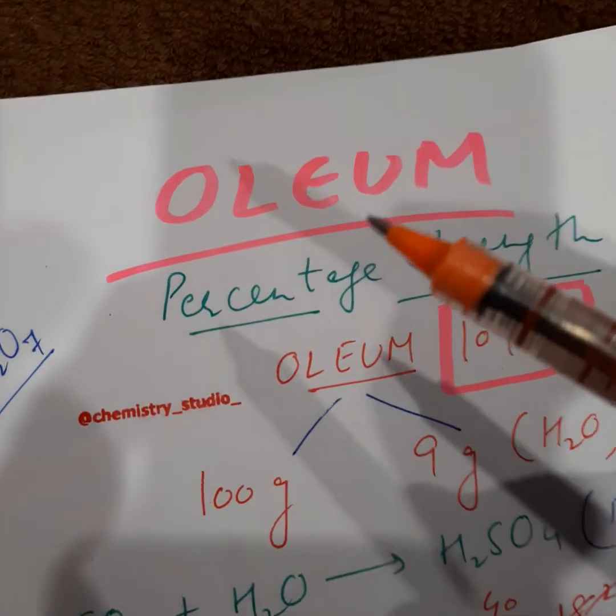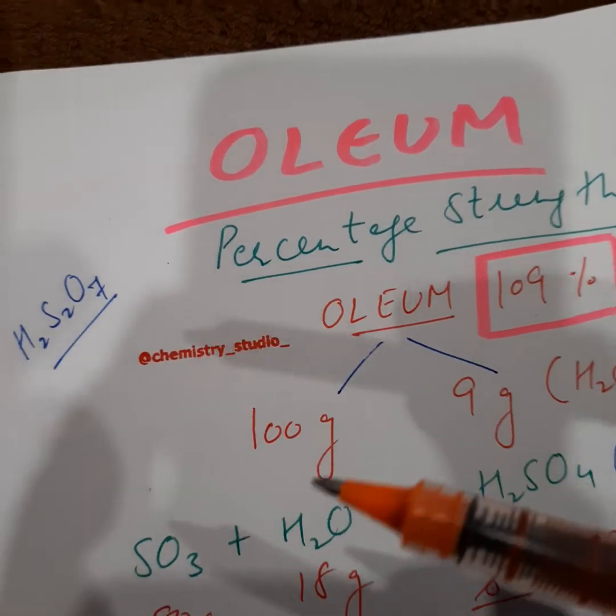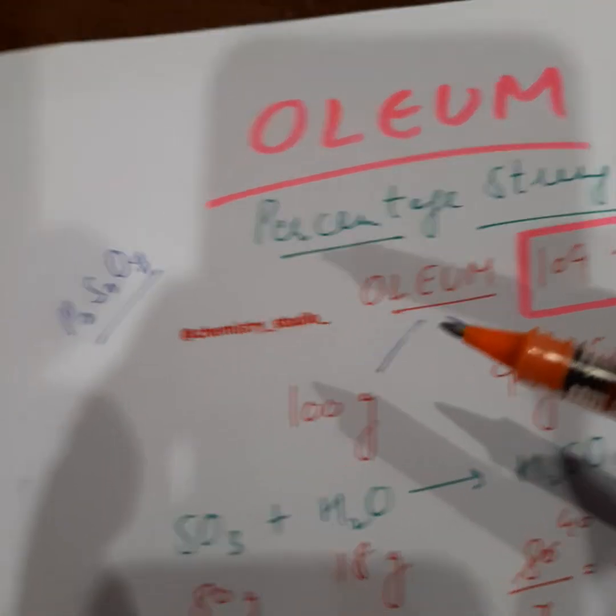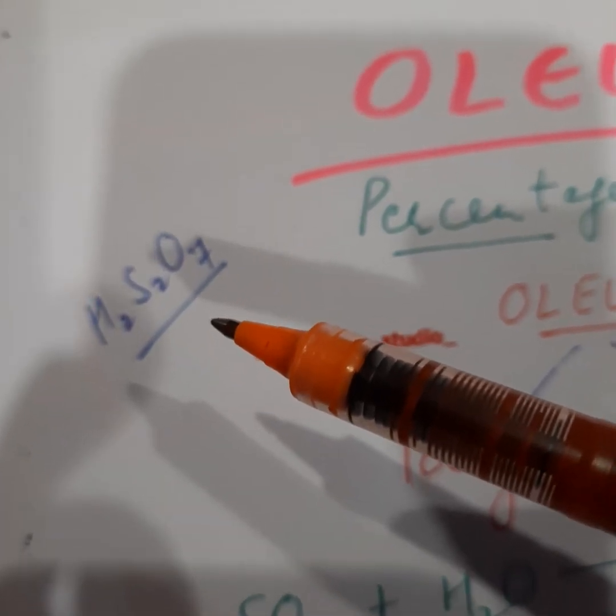Now first of all basics: what is oleum? When sulfuric acid H2SO4 reacts to sulfur trioxide SO3, it forms a compound H2S2O7 which is commonly known as oleum.